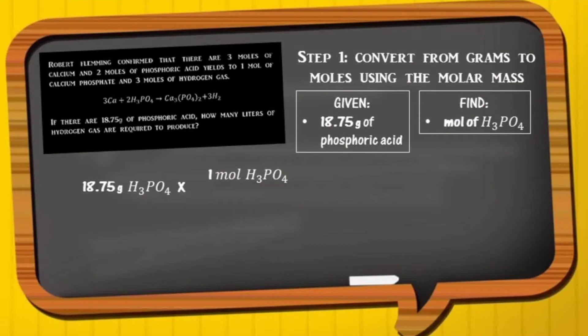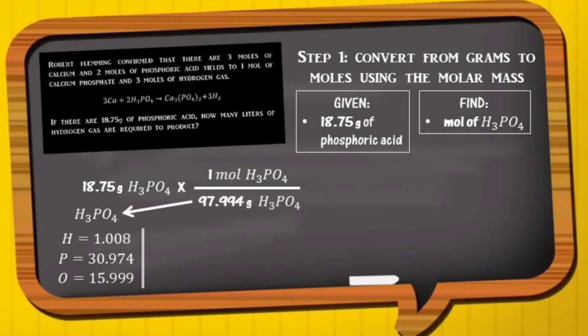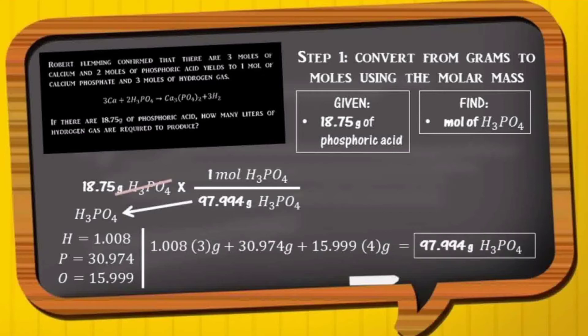1 mole of phosphoric acid is equal to 97.994 grams of phosphoric acid. So we need to cancel the grams. 18.75 times 1 divided by 97.994 is 0.191.